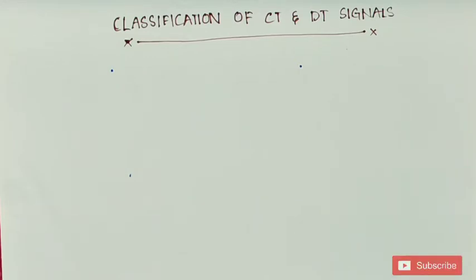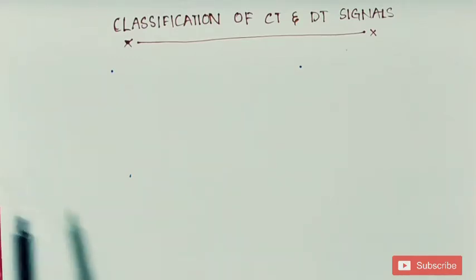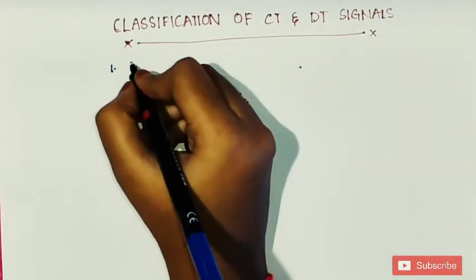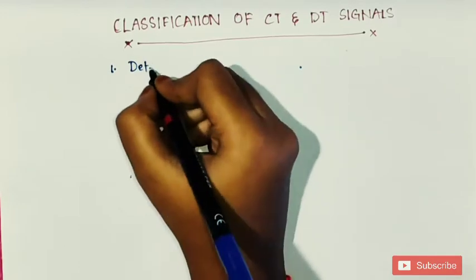In the previous video we learned about classification of signals. In this video we will also learn about classification of signals, but here the classification is based on continuous time signals and discrete time signals. These may be further classified into many types. The first classification is deterministic and random.